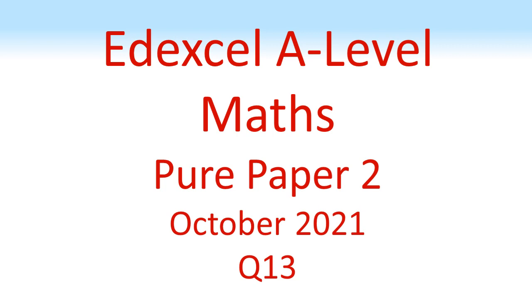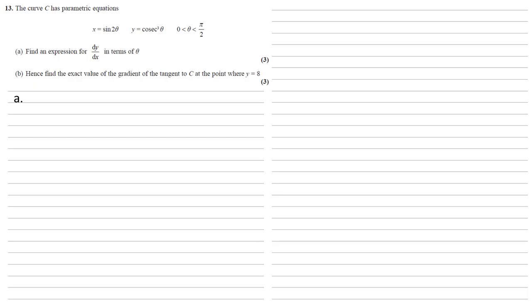Edexcel A-Level Maths, Pure Paper 2, October 2021, Question 13. The curve C has parametric equations x equals sine 2θ, y equals cosec cubed θ, for θ between 0 and π over 2.